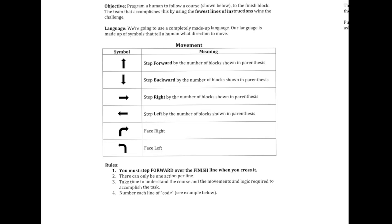So here are the rules. You must step forward over the finish line when you cross it. So you must walk forward into the finish block. And you'll see there on the next page what the course looks like. There can only be one action per line, so if you want two steps, you need to use an arrow. And then on the next line, use another arrow.